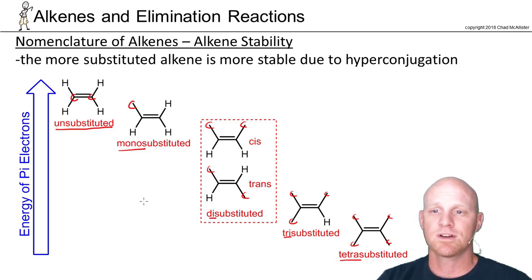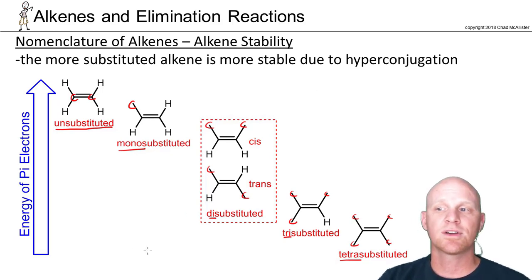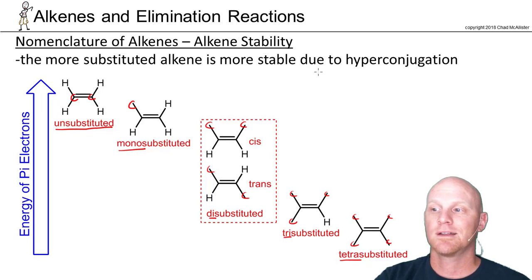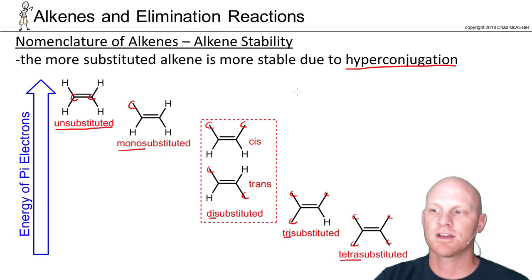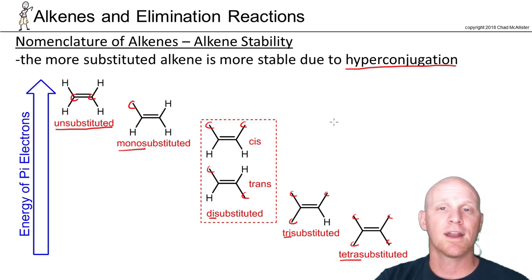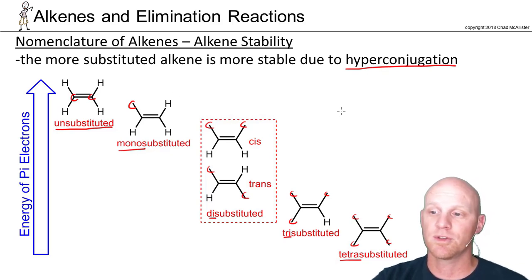So the big rule here is that the more substituted alkene is the more stable, and it's due to something we visited before called hyperconjugation. We looked at hyperconjugation, and hyperconjugation was related to carbocation stability as well, and we're seeing its role in alkene stability here also.